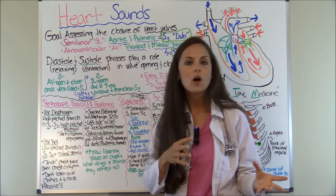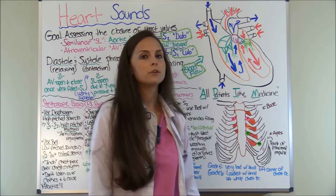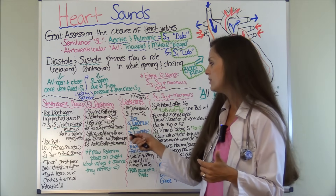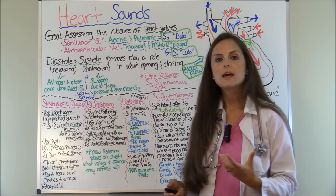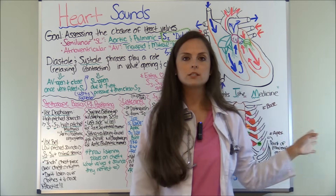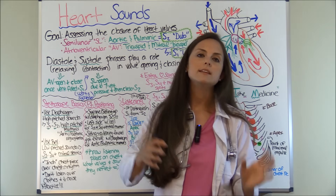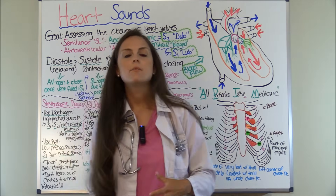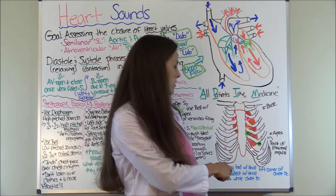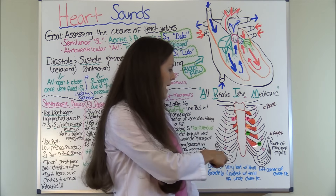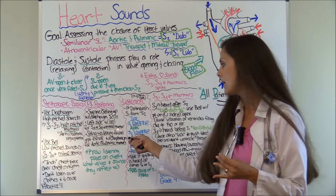Patient positioning is key to hearing these sounds because your heart is behind your sternum and ribs. Normally you start with the patient laying down or sitting up, listening with the diaphragm for S1 and S2. Then to listen for S3 and S4, turn the patient on their left side — because the majority of the heart is on the left side — and this shifts the heart over. Listen at the apex, which is the bottom of the heart. The base is at the top and the apex is at the bottom. Listen at the apex for S3, S4, and mitral murmurs.